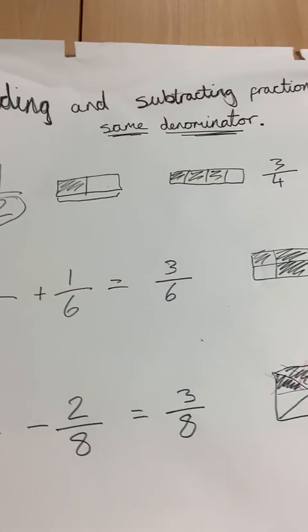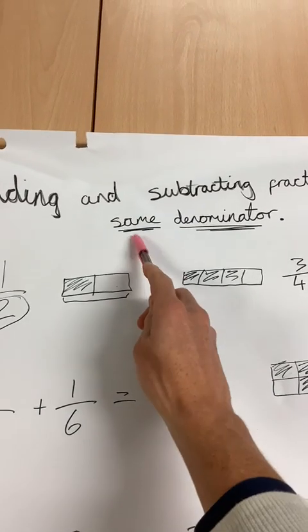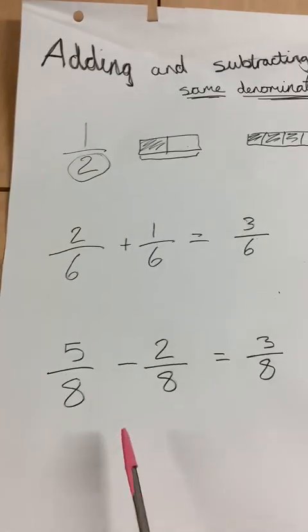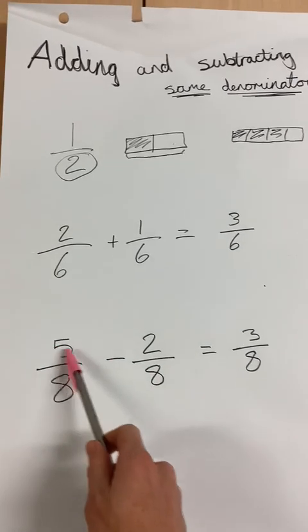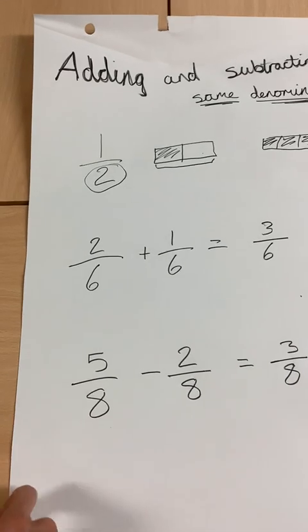So when the denominators are the same, you copy the denominator across, and just solve the problem on the top, the numerators.